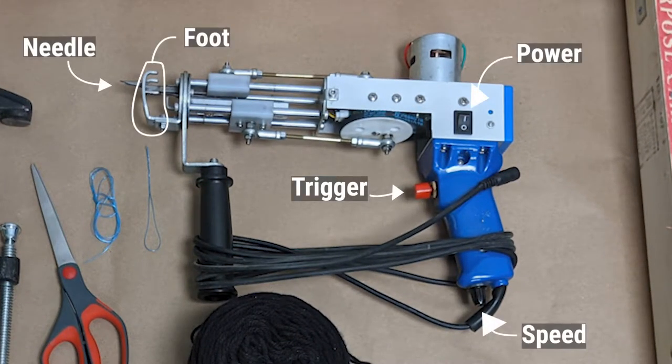Take a closer look at the parts of the tufting gun. There's a speed control, the trigger, the power button, the needle, and the foot. It's best practice to keep the power off when you're not using the gun, and definitely do not thread the gun with the power on.